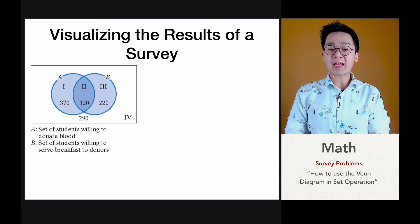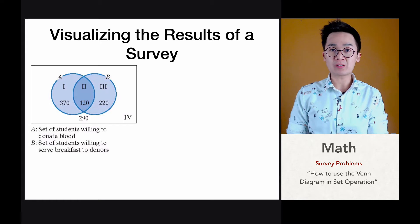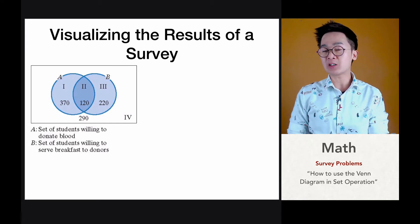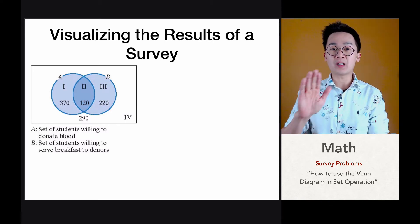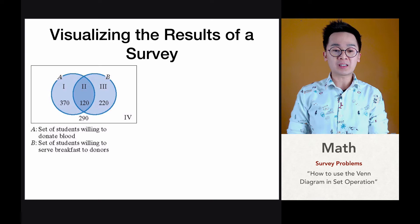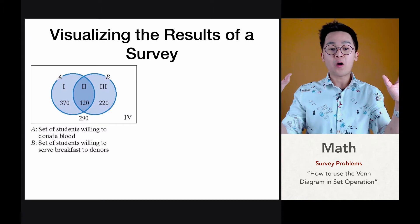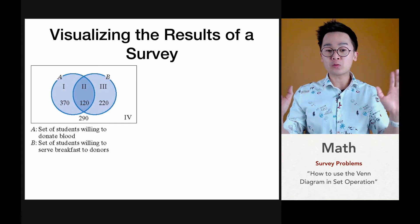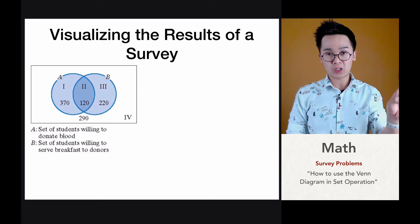When answering problems involving this Venn diagram, it's extremely important that you understand the numbers, the groupings, and the subsets in your union sets. You'll see that there are 290 students in group four, which means they are neither in subset A nor subset B — these are students who don't want to donate blood and don't want to serve breakfast.